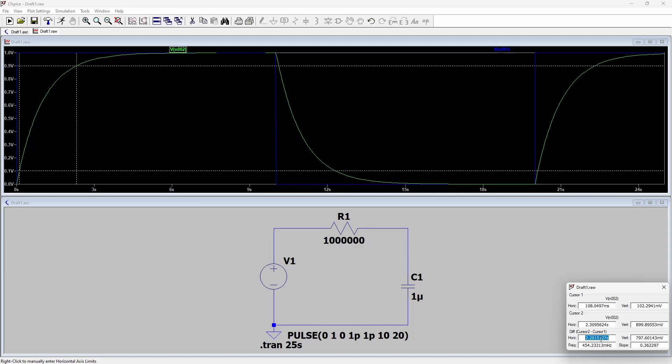So this simulation basically shows us that the equation is accurate. Obviously it is a rough approximation as it's not going to be 100% accurate. But the rise time from 10% to 90% of an RC circuit is roughly 2.2 times R times C.